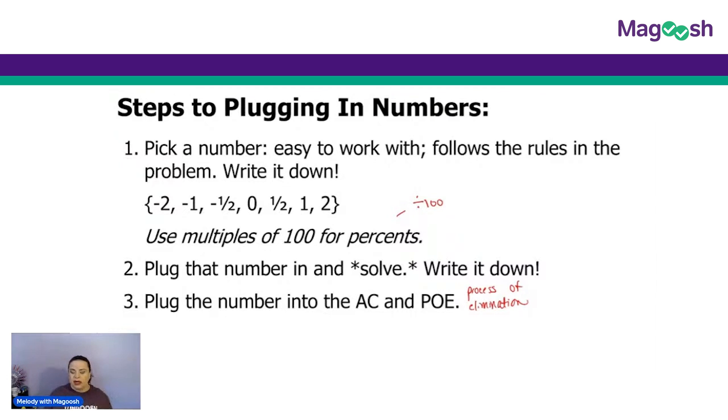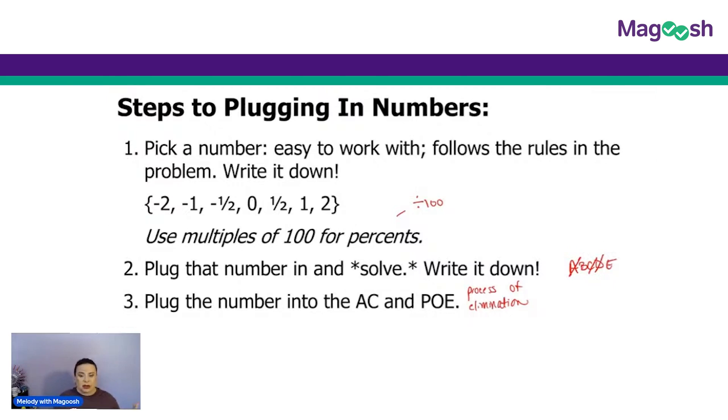On your scratch paper, I like to actually write down the letters A, B, C, D, and E, since we're talking about a computer-based test. And I will cross out the letters that don't match until there's only one left.